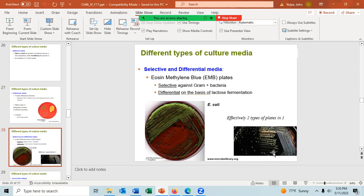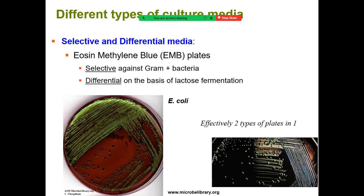You can combine media types. EMB (eosin methylene blue) is both selective and differential: it is selective against gram-positive bacteria, so mainly gram-negative bacteria grow on it, and it is differential on the basis of lactose fermentation. Bacteria that ferment lactose appear greenish or blackish, while gram-negative bacteria that do not ferment lactose appear their normal color — in this case white.